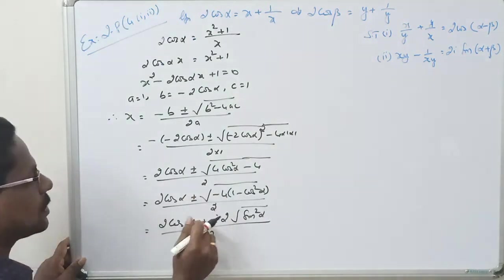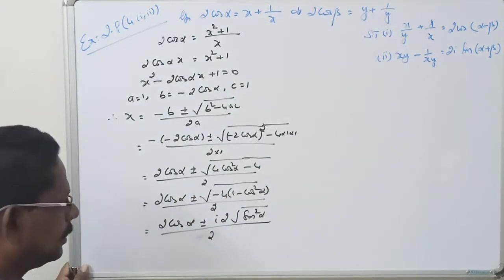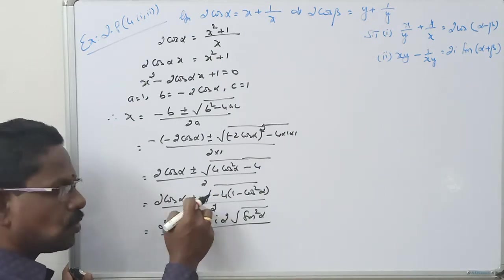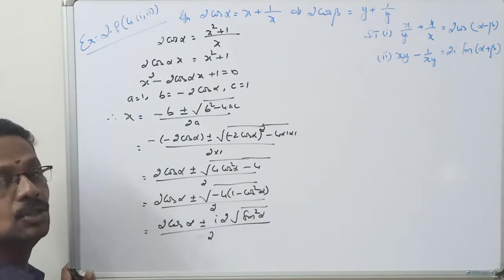Minus comes out as i, and 4 comes out as 2. So we factor out 2 from the numerator.